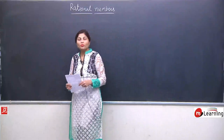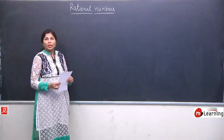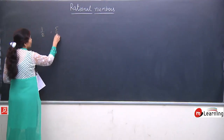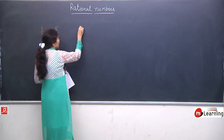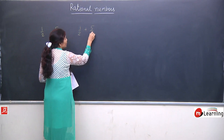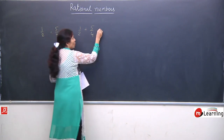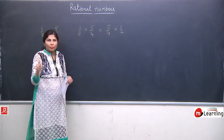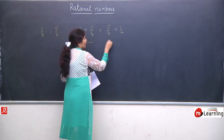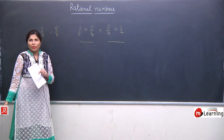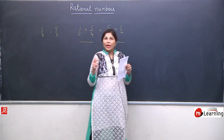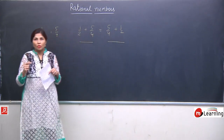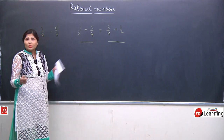Friends, just now we have seen the commutative property for addition. If we have two rational numbers like 1/2 and 5/4, commutative for addition means 1/2 + 5/4 is the same as 5/4 + 1/2 — the answer remains the same. This is the commutative property of rational numbers for addition.